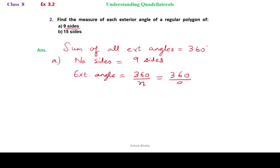Here we have nine sides, so 360 divided by 9. Nine ones are nine, nine fours are 36, so the value of the exterior angle is 40 degrees. Therefore, a polygon with nine sides will have an exterior angle of 40 degrees.